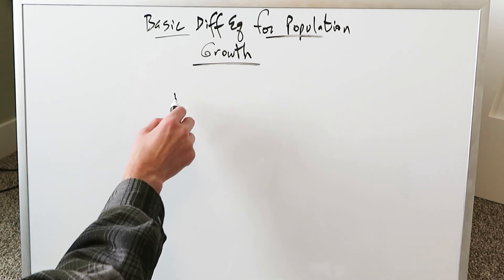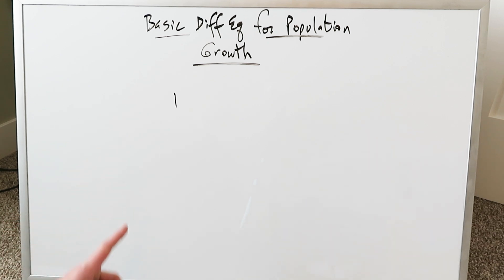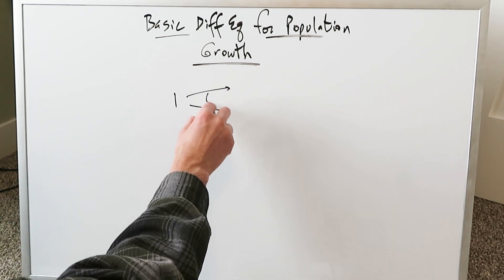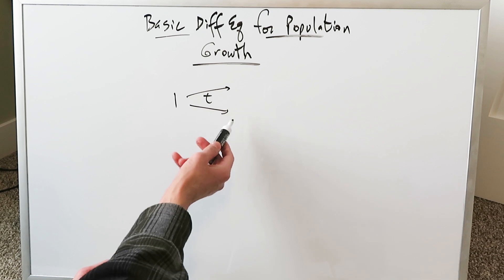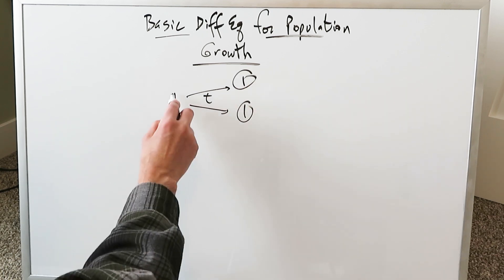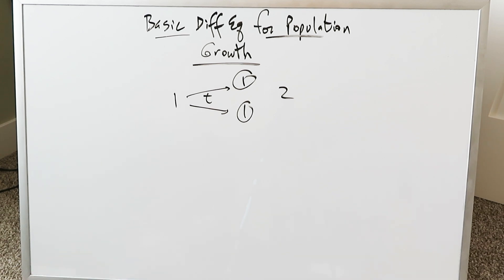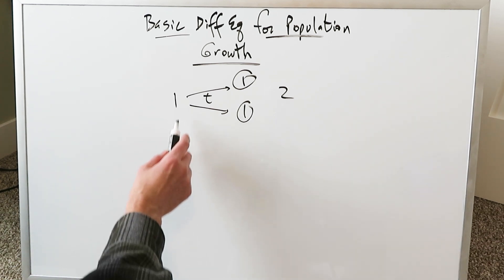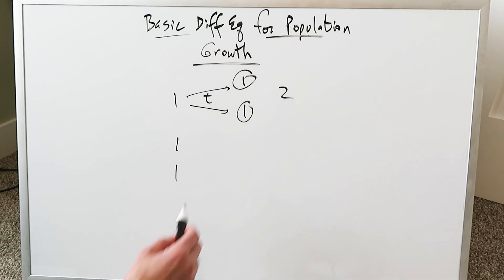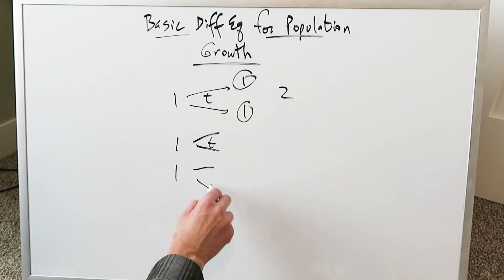Think about this: if you're starting with a single bacterium, it has a certain doubling time. After that period of time T, it doubles into two items — you started with one, now you have two. Now consider starting with two bacteria, which each have the same doubling time — they double at the same time.